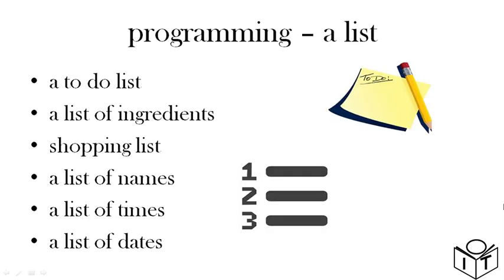How about a list? You maybe write a to-do list or a list of ingredients, shopping list, or maybe have a list of names or times or dates. They're all lists. So we have lists.